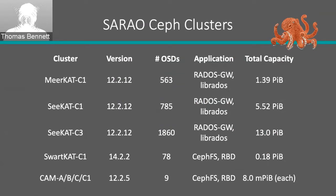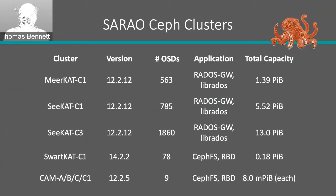This table gives an idea of the versions we're running. We're currently still running Luminous, with plans to upgrade all main production clusters to Nautilus — I'm in the process of testing upgrade paths. In terms of sizes, the Meerkat clusters are just over a petabyte, all SSD storage. We've got our spinning disk storage — Seerkat C1 and Seerkat C3. C3 is our current production cluster; C1 is being decommissioned and will serve as a test cluster before being absorbed into Seerkat C3. We've also got some smaller clusters, including small test clusters measured in millipetabytes.